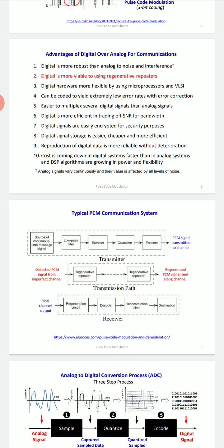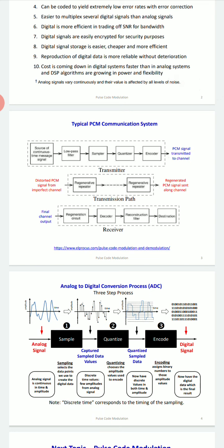The block diagram for PCM consists of three main parts: the transmitter, the transmission path or channel, and the receiver. In the transmitter we perform encoding and quantization. In the receiver we do exactly the reverse — decoding, using a regenerative circuit, and converting the digital signal back to the original analog signal through reconstruction.